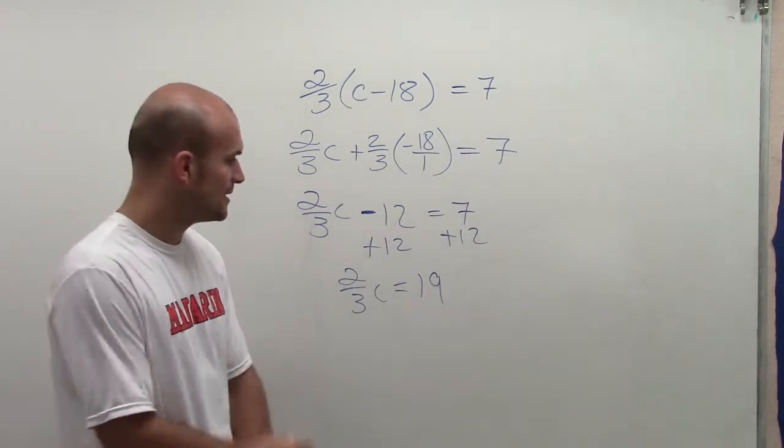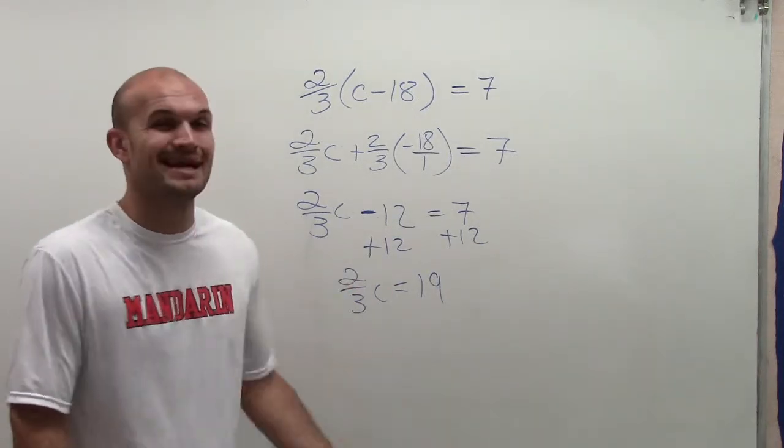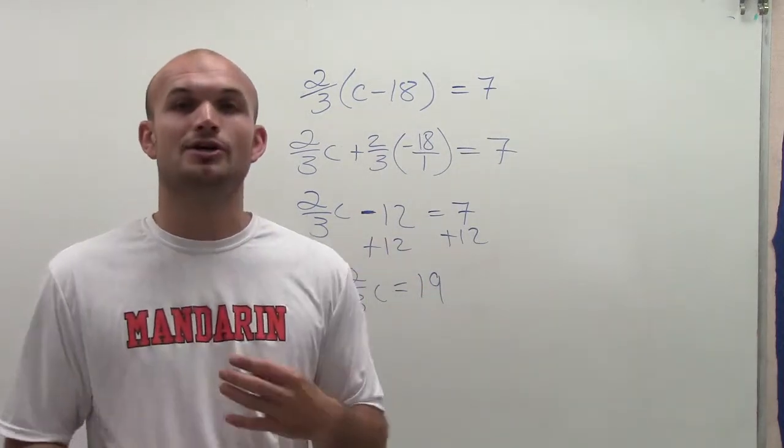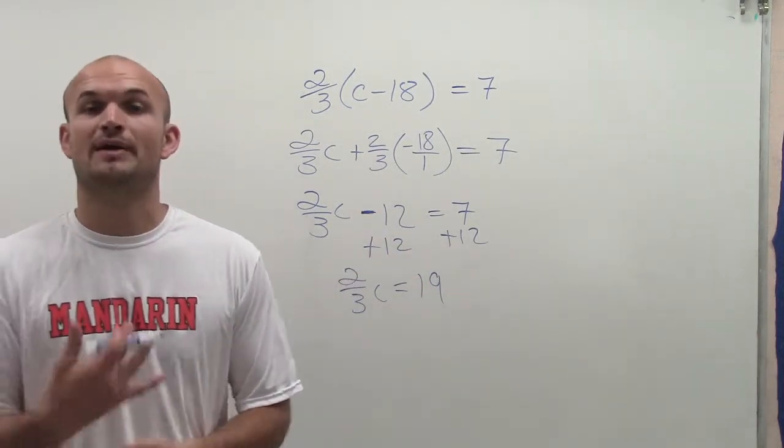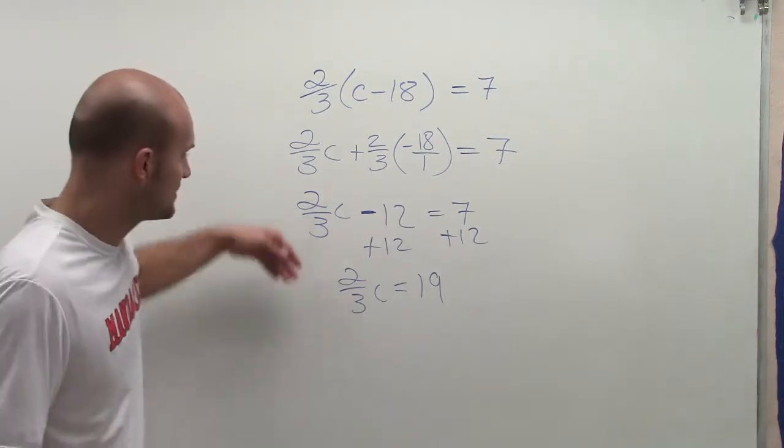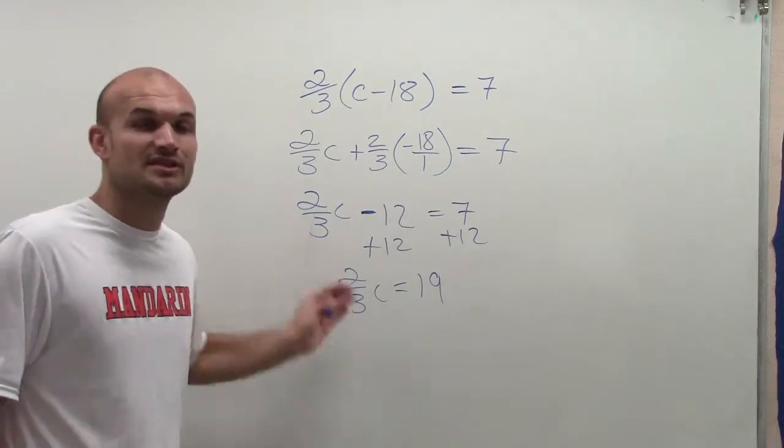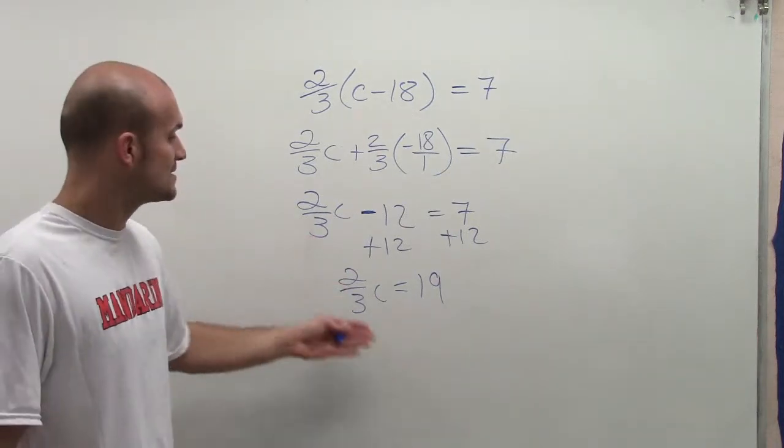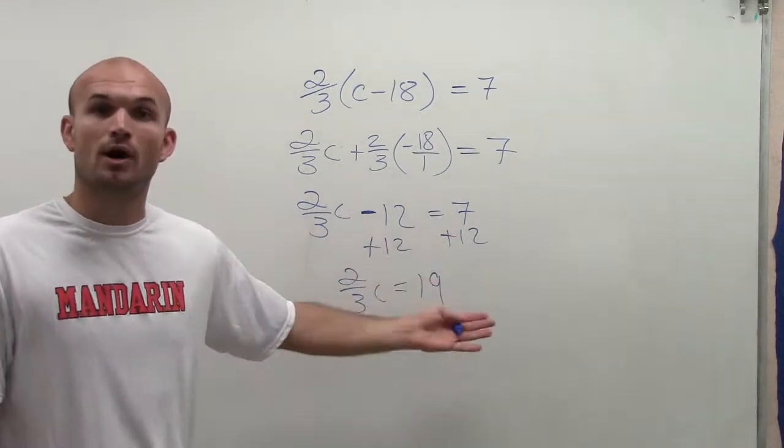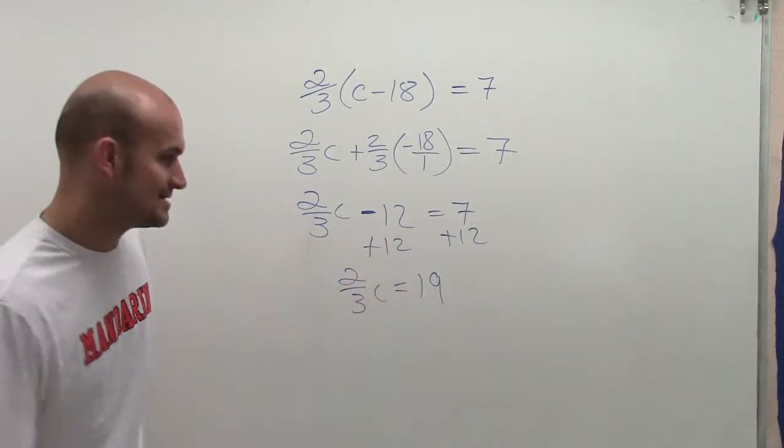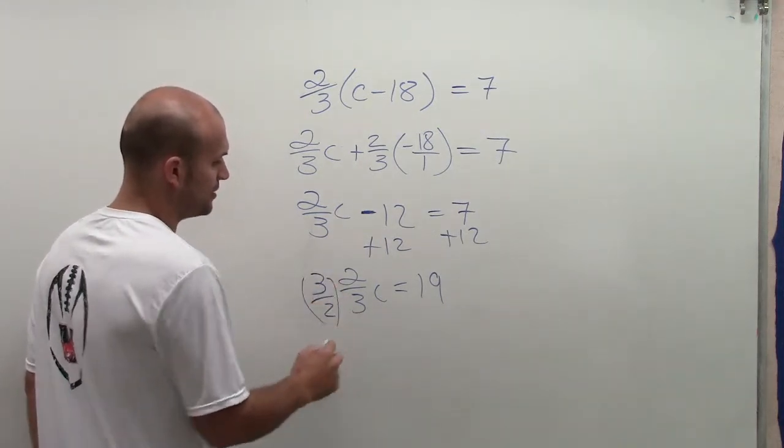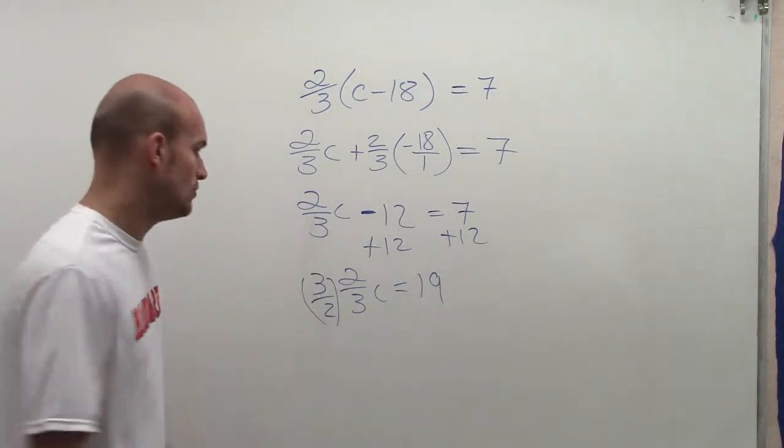Then, the last thing I'm going to do is, I have 2/3 times c equals 19. Now I need to undo multiplying by 2/3. I could divide by 2/3, but I also showed you guys in the one-step equations, there's another way you can do it. To get rid of the 2/3, you could divide by 2/3 on both sides, which is going to make the 2/3 divide by 2/3 equal 1, leaving your variable by itself. You could also just multiply by the reciprocal, because 2/3 times 3/2 is going to equal 1. So you're left with c.